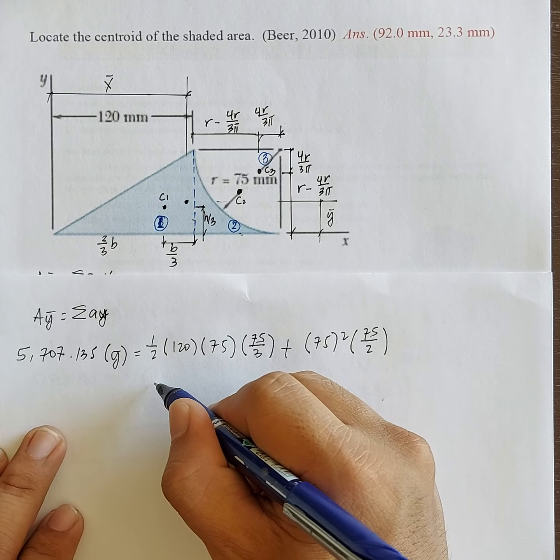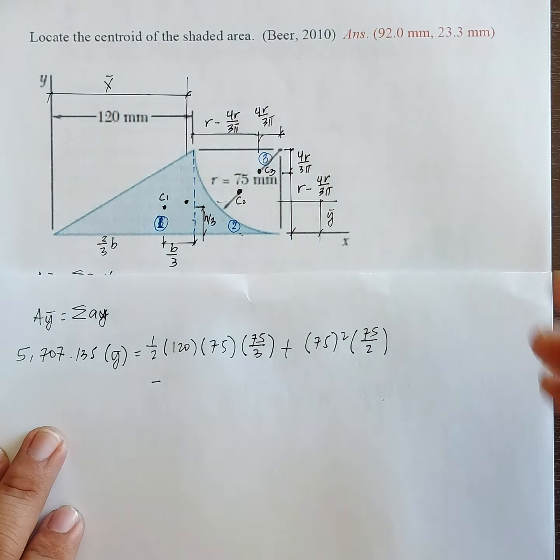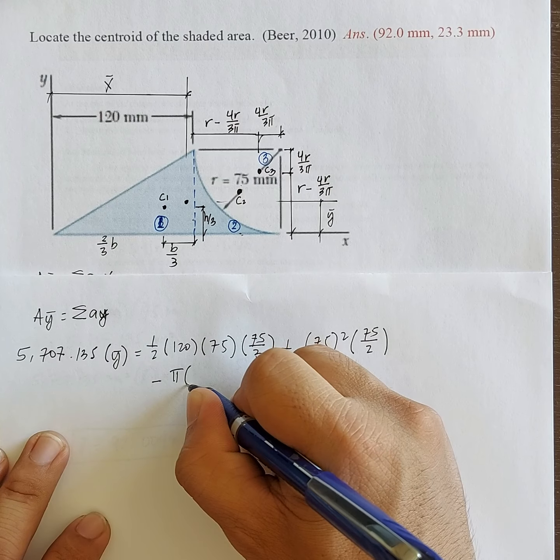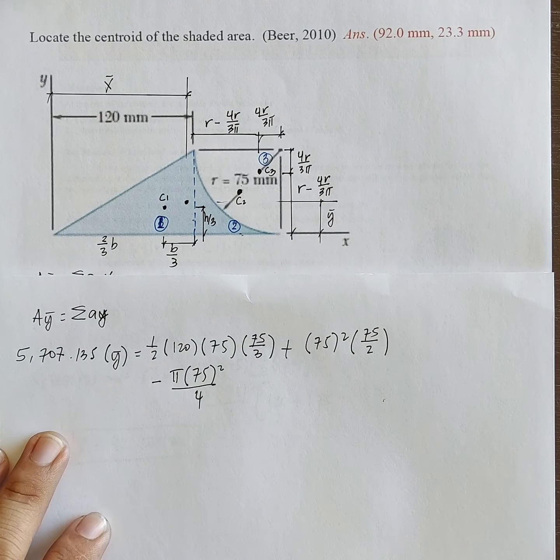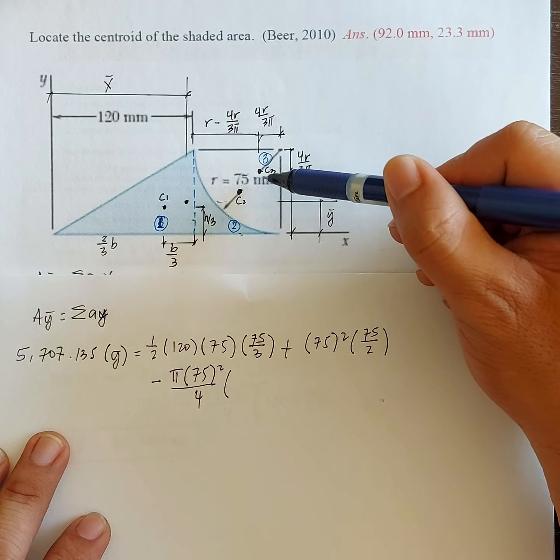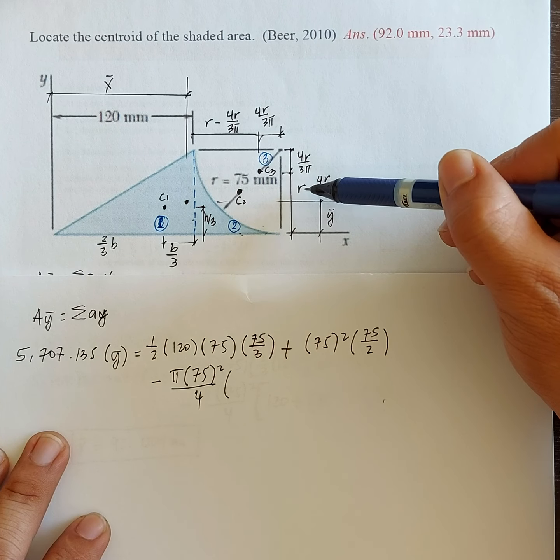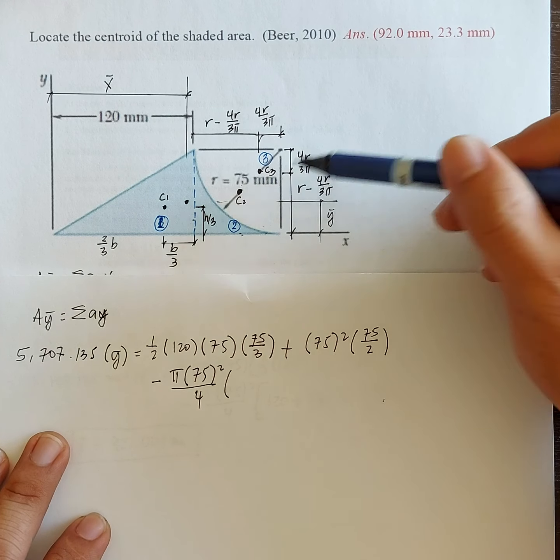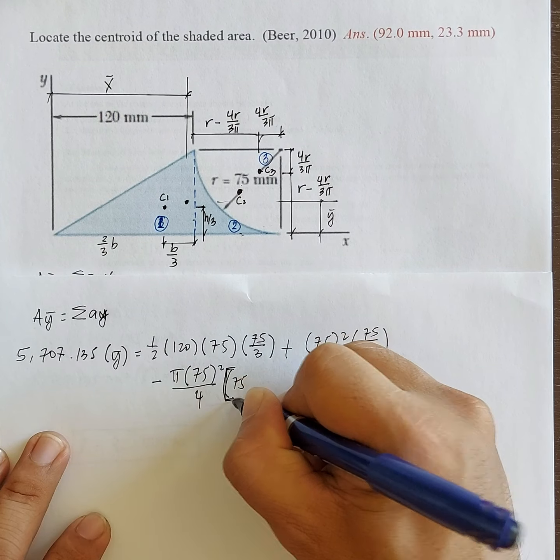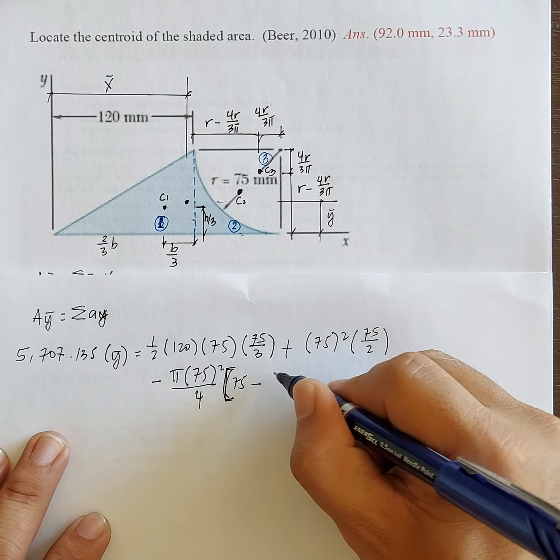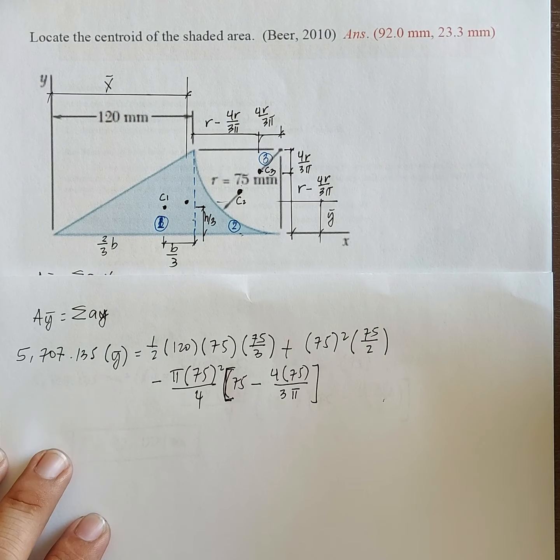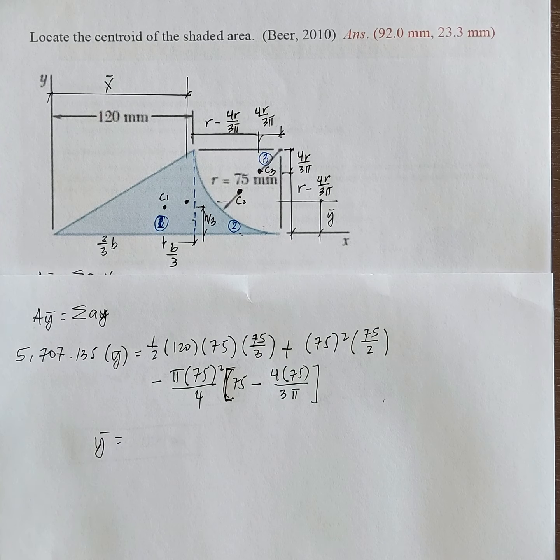Minus the quarter circle, that is pi r, r is 75 squared over 4, the area of the quarter circle, times its moment arm about x-axis. So C3 to x-axis. So that is r minus 4 r over 3 pi. So that is 75, bracket, minus 4 r over 3 pi, so 4 times 75 over 3 pi. So you can now solve for y-bar.